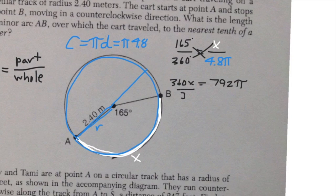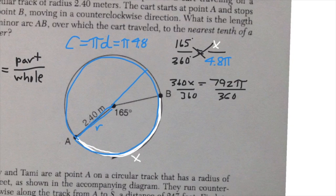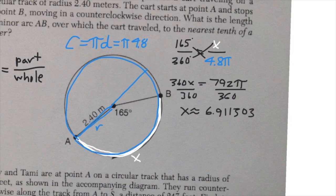Dividing both sides by 360 gives me the answer. I type 792 times π divided by 360 into the calculator — using the actual π button, not 3.14 — and I get approximately 6.9115. Rounding to the nearest tenth, the answer is 6.9 meters.